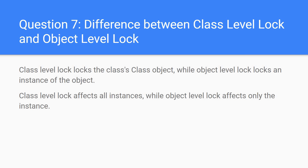Question 7: difference between class-level lock and object-level lock. Class-level locks use the Class object, while object-level locks use an instance of the object. Class-level locks affect all instances of the class, whereas object-level locks affect only that particular instance. If you lock the class, it affects all objects created from it; if you use an object-level lock, it affects only that specific object.